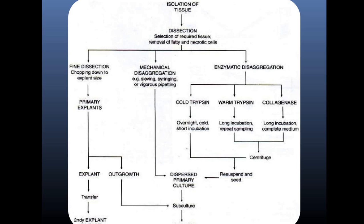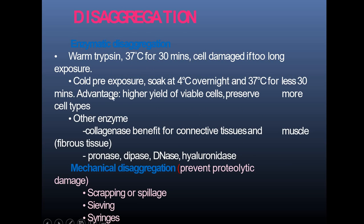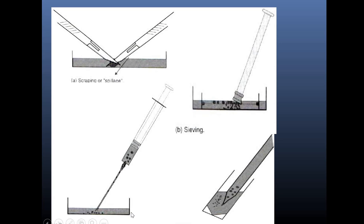To isolate tissue, you sterilize the site with 70% alcohol, remove the tissue aseptically, and send it to the laboratory in an appropriate transport medium. If there's a suspected delay, keep it at 4°C for up to 72 hours. For enzymatic disaggregation, enzymes used include trypsin, collagenase, pronase, dispase, DNase, and hyaluronidase. For mechanical disaggregation, methods include scraping, sieving, syringing, and repeated pipetting.